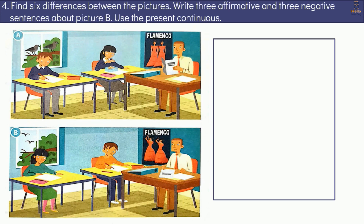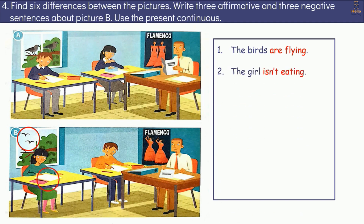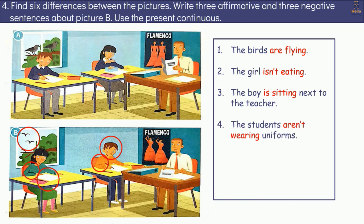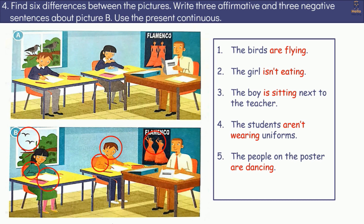Exercise 4: Find 6 differences between the pictures. Write 3 affirmative and 3 negative sentences about picture B using the present continuous. Sample answers: The birds are flying. The girl isn't eating. The boy is sitting next to the teacher. The students aren't wearing uniforms. The people on the poster are dancing. The teacher isn't reading.